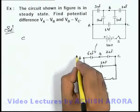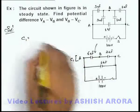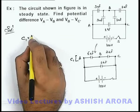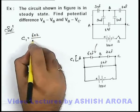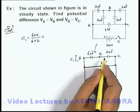Of this branch, say this capacitance is C1. C1 can be written as 6 and 2 in series combination. That will be 6 into 2 by 6 plus 2. That will be, in this situation we can see,